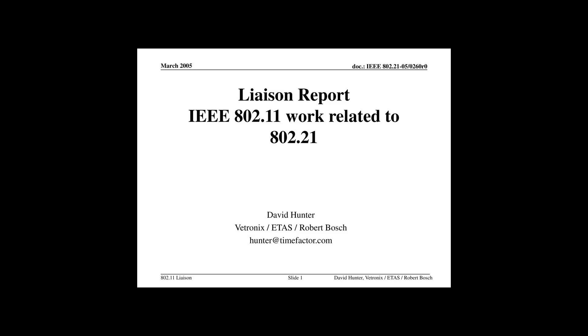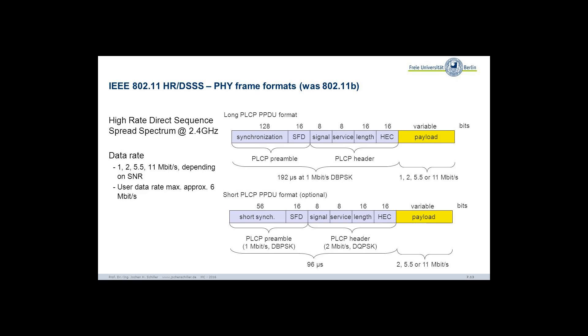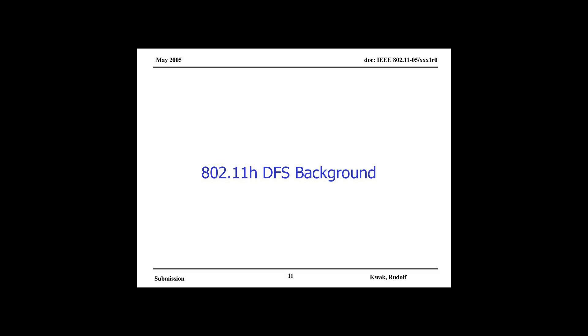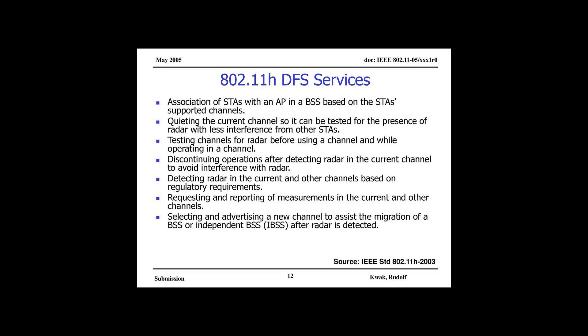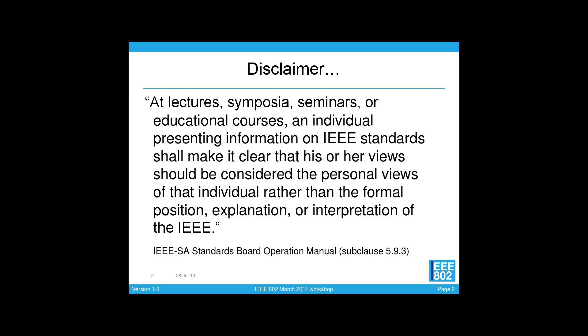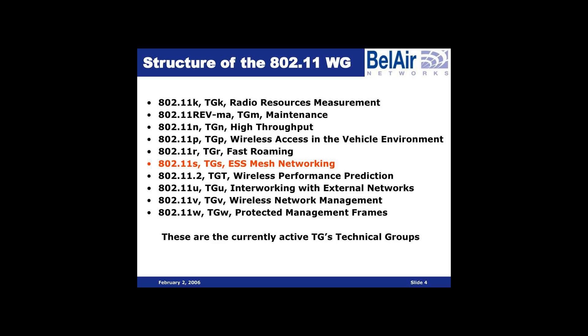Wireless Network Management. 802.11v is the wireless network management standard for the IEEE 802.11 family of standards. 802.11v allows client devices to exchange information about the network topology, including information about the RF environment, making each client network aware and facilitating overall improvement of the wireless network.